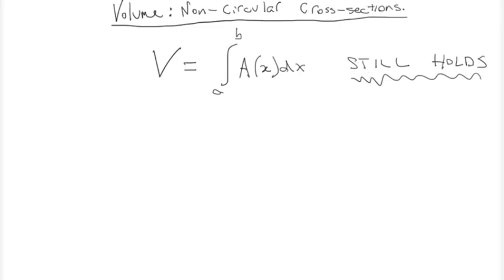In the previous video, we discussed the revolution method of finding volume by revolving a curve around an axis, and that uses circular cross-sections to find that volume. However, in this lesson, we're going to be using non-circular cross-sections, and the cross-sectional area is expressed by this function A(x).